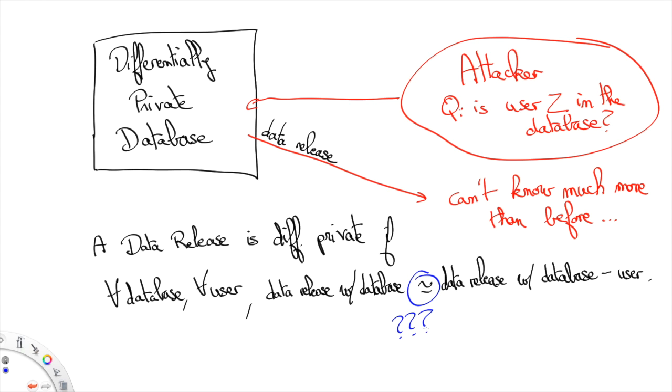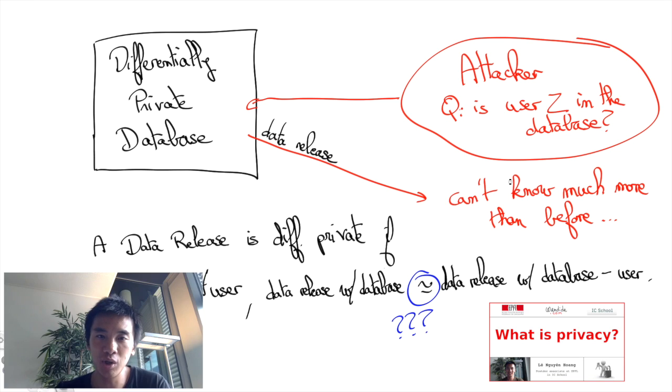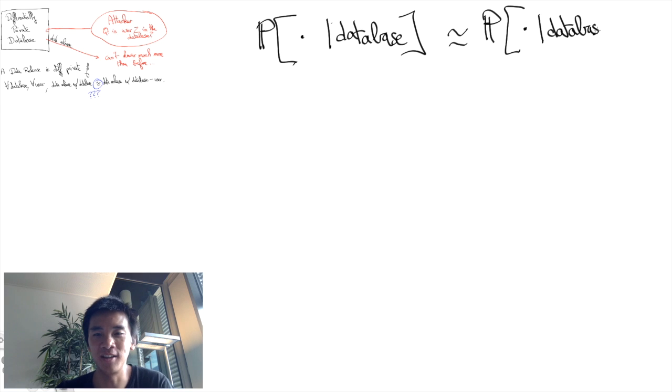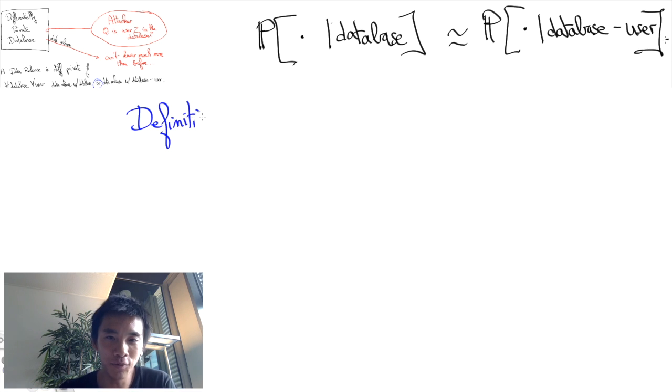How can we define nearly rigorously in a relevant manner, especially to guarantee the robustness from the post-processing we discussed in a previous episode? The trick is to use probability theory. Namely, we'll say that the data released will be nearly the same if, with high probability, their probability distribution will be nearly the same.